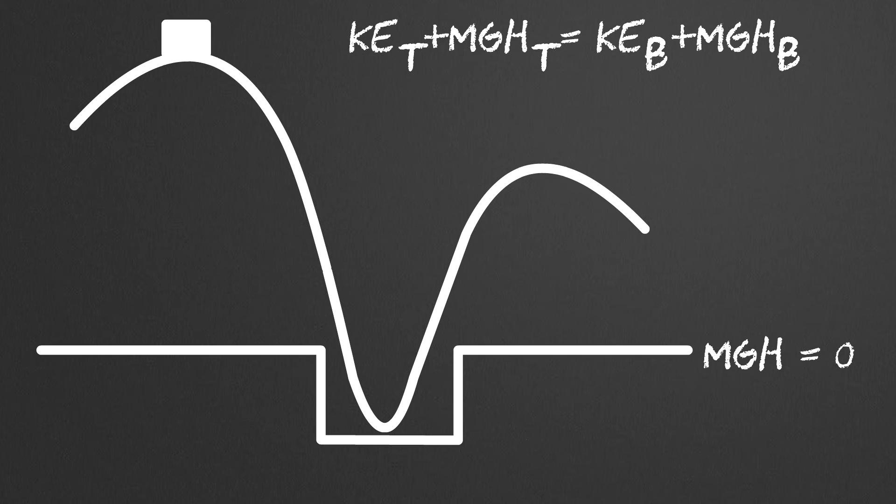But, since our potential energy is actually negative in the hole, it reads as kinetic at top plus potential at top equals kinetic at bottom minus potential at bottom. If we made the mistake of making our potential energy at the bottom positive, we are saying our height is positive, and are really comparing our energy at the top to here.